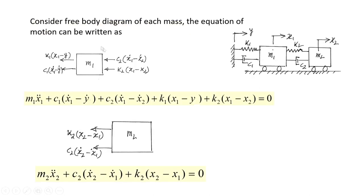Let us find the differential equations of motion using free body diagrams. For mass m1: the spring force at the base end is k1(x1 minus y), the damping force is c1(x1-dot minus y-dot); at the upper end, the spring force is k2(x1 minus x2) and damping force is c2(x1-dot minus x2-dot). Writing dynamic equilibrium: m1·x1-double-dot plus c1(x1-dot minus y-dot) plus c2(x1-dot minus x2-dot) plus k1(x1 minus y) plus k2(x1 minus x2) = 0.